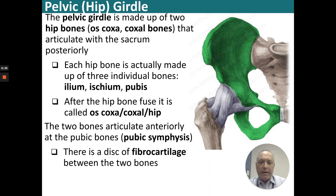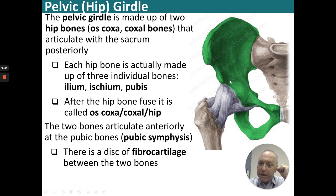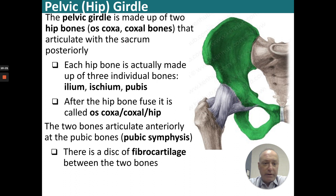We've done the hand and the shoulder; now let's go to the hip. The pelvic girdle is made up of two hip bones — the os coxa and the coxal bones — that articulate with the sacrum. Each hip bone is actually made up of three individual bones: the ilium, the ischium, and the pubis. After the three bones fuse, it's referred to as the os coxa, coxal, or hip bone. The two bones articulate anteriorly at the pubic symphysis, which is a fibrocartilage disc between the two bones.